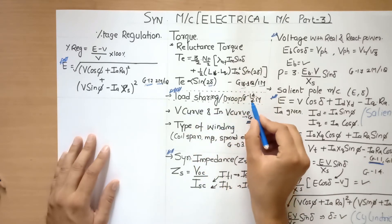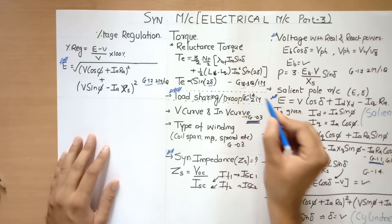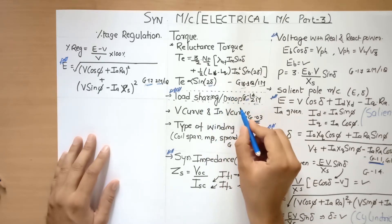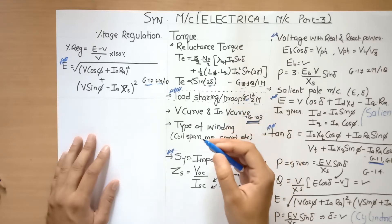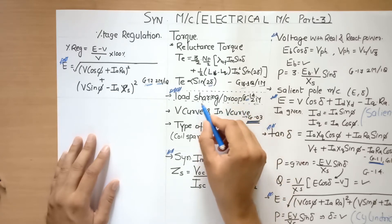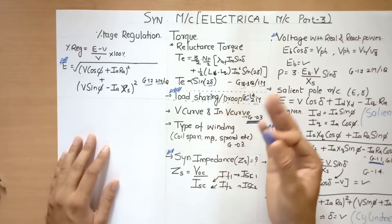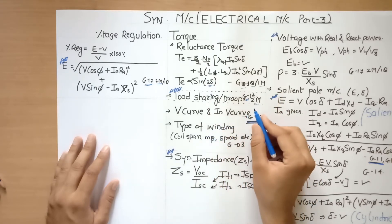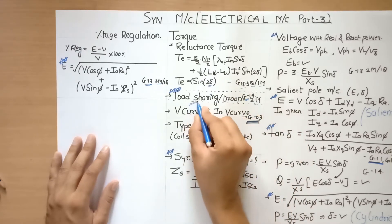There was one more question in gate 2014 of 2 marks that was load sharing and droop characteristic. Based on the droop characteristic, there is a variation of frequency with respect to power. If new load is taken or given to the alternator, how much frequency drop will occur and what will be the new frequency.